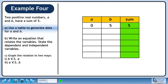The first numbers we'll try are 0 for A and 5 for B. They have a sum of 5. We could also use A equals 1 and B equals 4 to get a sum of 5.